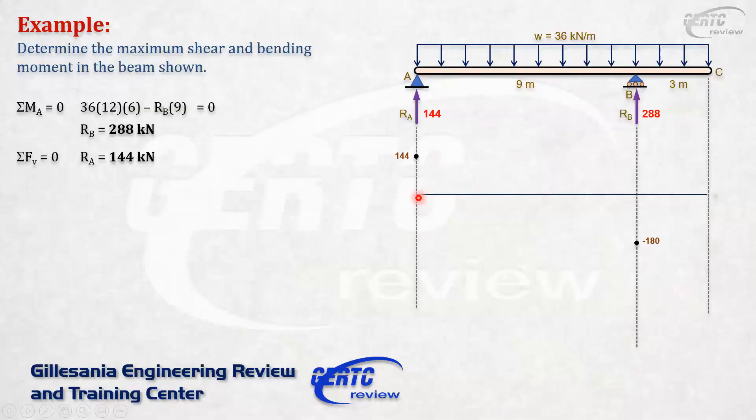You will start from here, go up, then go down. Then we go up 288. So negative 180 plus 288 gives positive 108. Then 108 minus 36 times 3, of course that gives you zero. So it becomes zero here. These are our points. Here we see that for maximum shear, the maximum shear is negative 180, maximum negative shear. For maximum positive shear, that is 144.